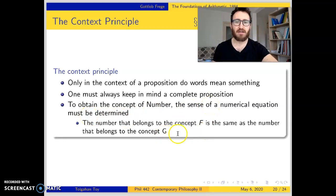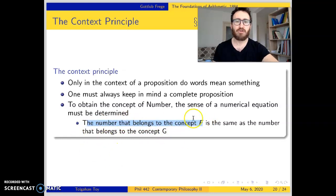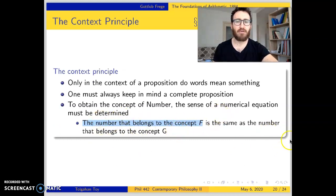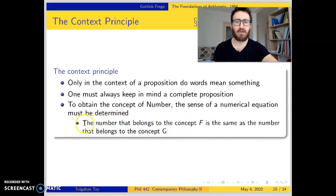Numerical equations are in this form: 'the number that belongs to the concept F is the same as the number that belongs to the concept G.' As you see, 'the number that belongs to the concept F' is part of this equation. So the meaning of this part depends on the meaning of the whole expression. In order to obtain the meaning of this part, we need to have the conceptual content of the entire equation.